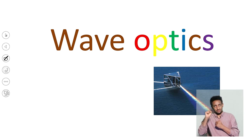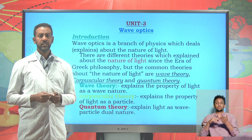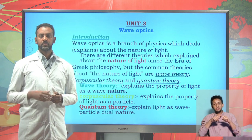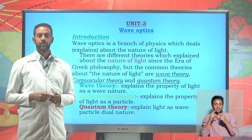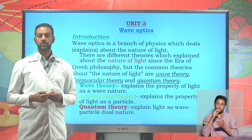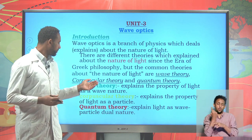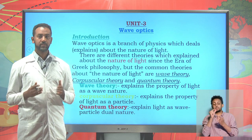Wave optics is a branch of physics which mainly concerns the study of the nature of light. There are different theories concerning the nature of light. Among those proposed, the common ones are wave theory, corpuscular theory, and quantum theory — the modern physicist theory. Quantum theory finalizes that light has both wave and particle dual nature.